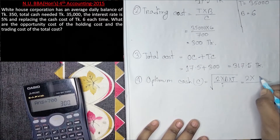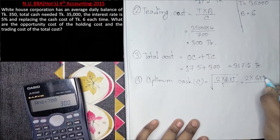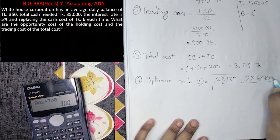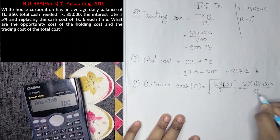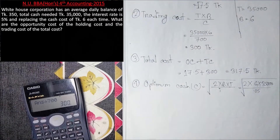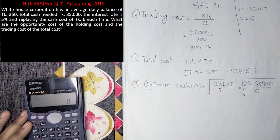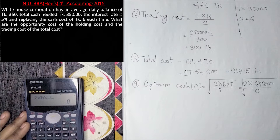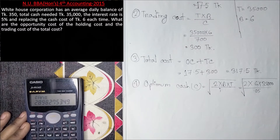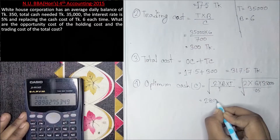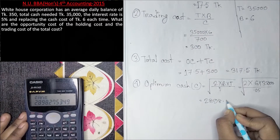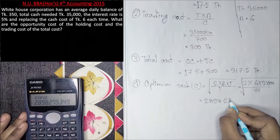So the formula is: 2 times b — which is 6,000 — times T — which is 35,000 — divided by i, which is 0.05. Taking the square root of that. The answer comes out to approximately 2,728 or around 2,731. This is the optimum cash, the target cash balance.